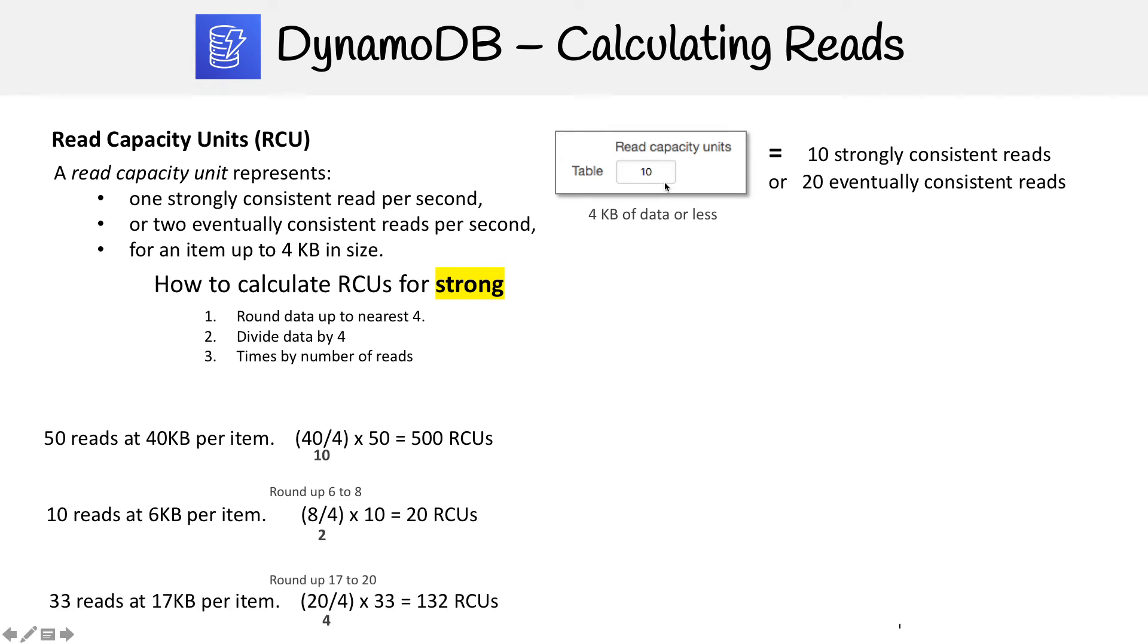The last one here, we have 33 reads at 17 kilobytes per item. And so 17 kilobytes need to be rounded up to 20, 20 is divisible by four becomes five. And then we times five by the number of reads, which is 33.